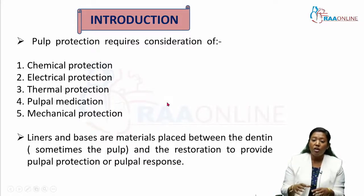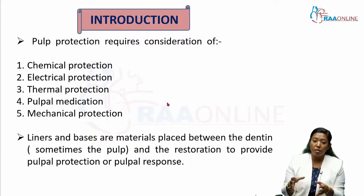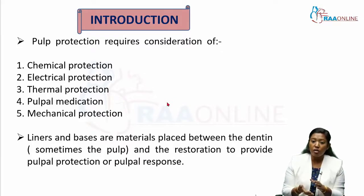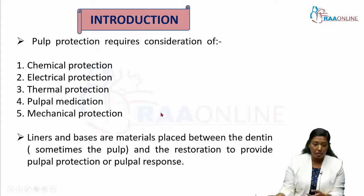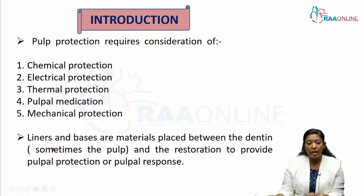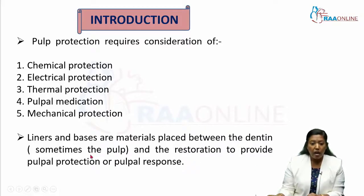The last type of protection is mechanical protection. When you are doing a Class I cavity in a lower molar and placing a restoration like amalgam, you need to protect the pulp from heavy mechanical stresses. So these are the five types of protection that we need to give to the pulp.